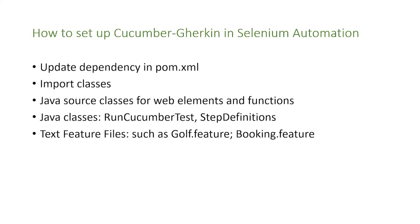So how do we set up Cucumber Gherkin in Selenium automation? First, we need to update the dependencies in our pom.xml file. Following that, we need to import classes — Java source classes for web elements and functions and so on. Then we need to make Java classes as well, such as RunCucumberTests and step definitions. Finally, we need to make text feature files. For example, these could be golf.feature or bookend.feature, but the extension of the files is .feature.